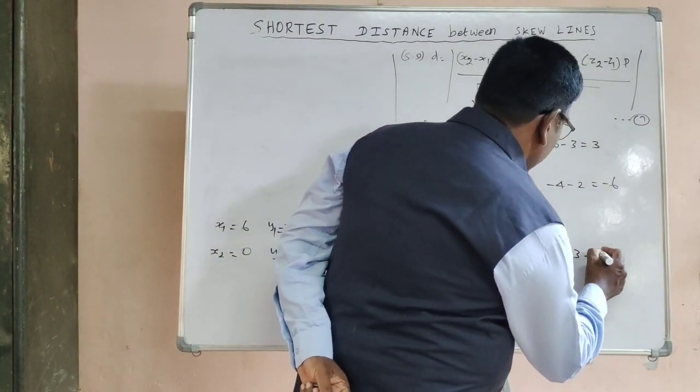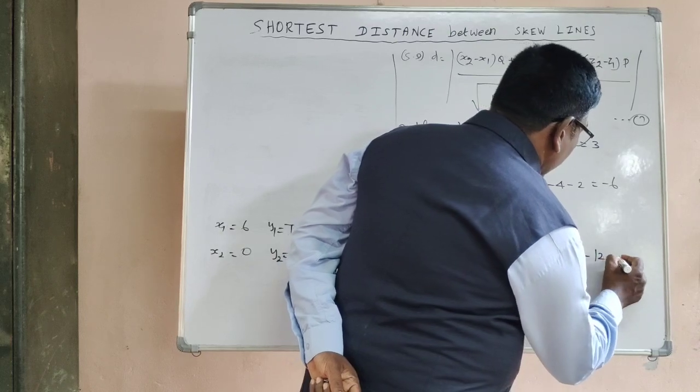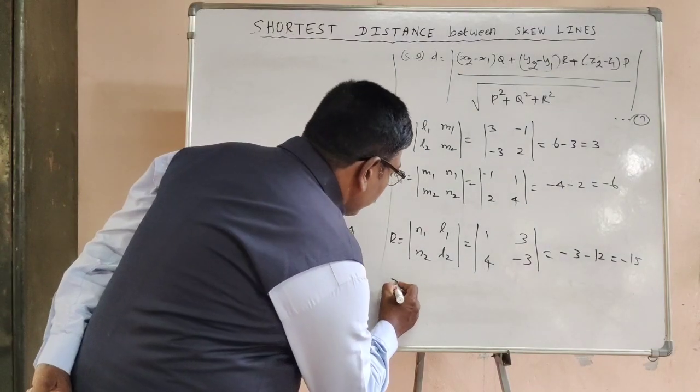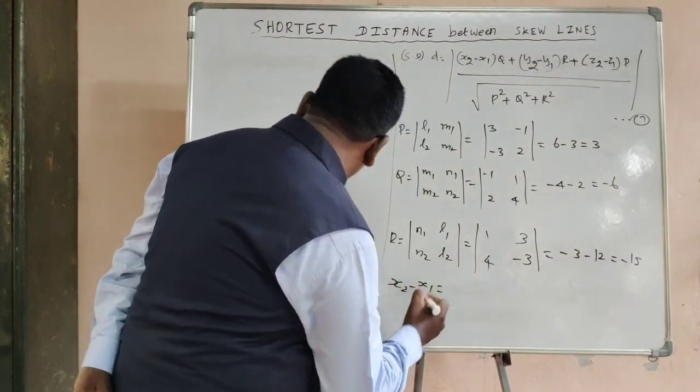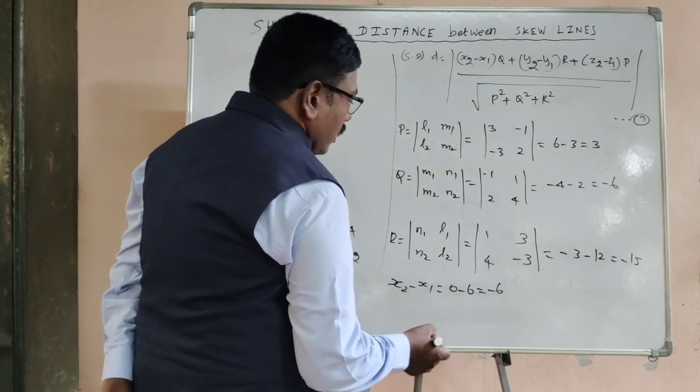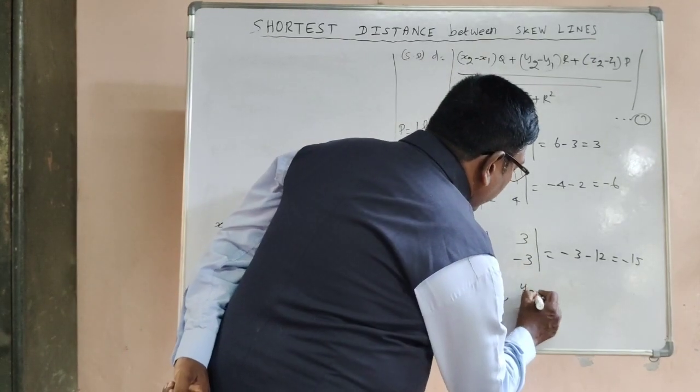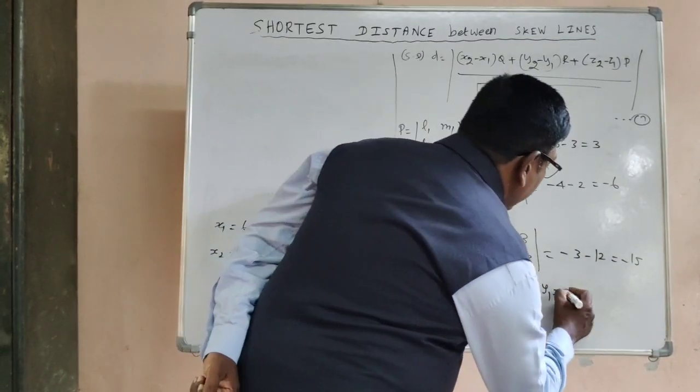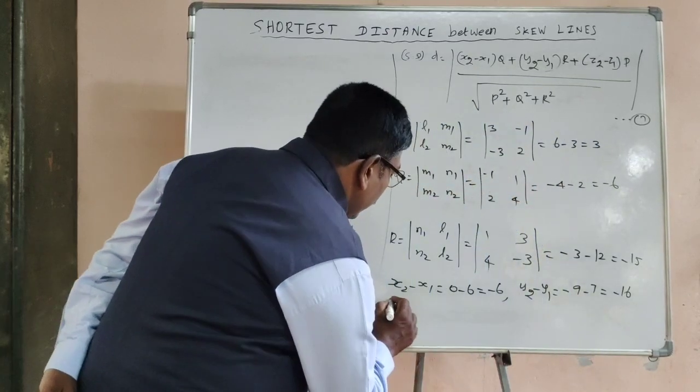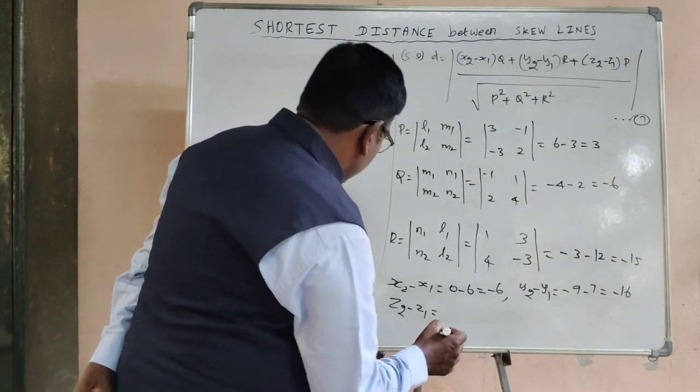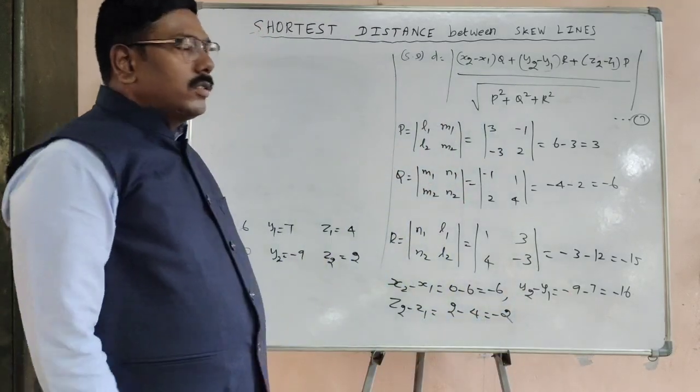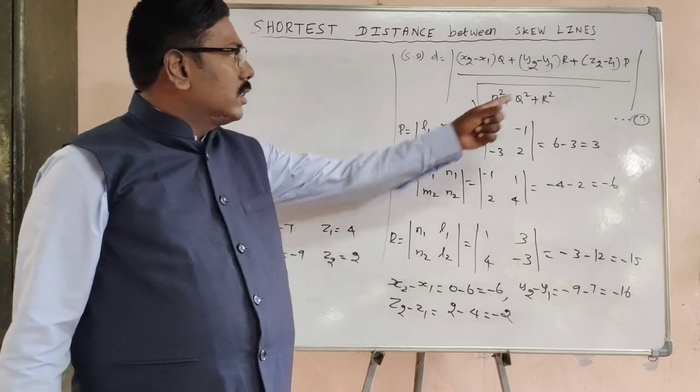Now find x2 minus x1: 0 minus 6 which is equal to minus 6. And y2 minus y1: minus 9 minus 7 which is equal to minus 16. And z2 minus z1: 2 minus 4 which is equal to minus 2.